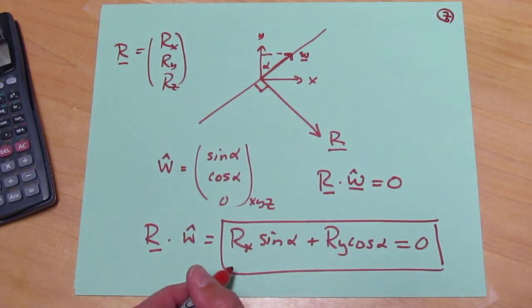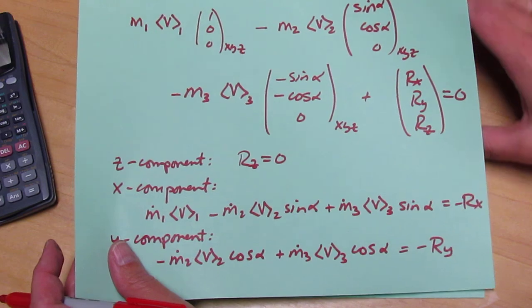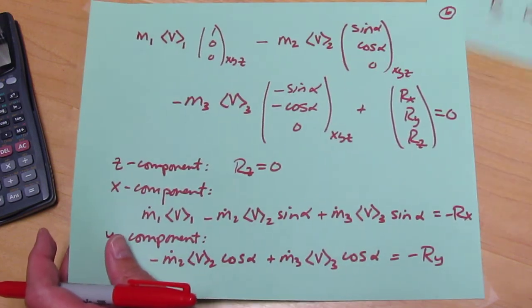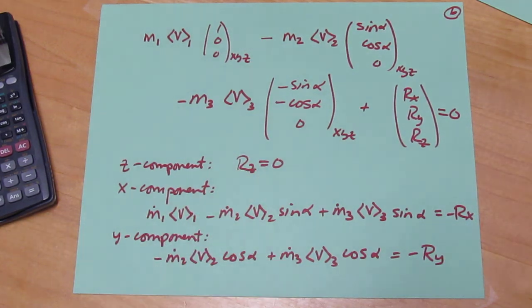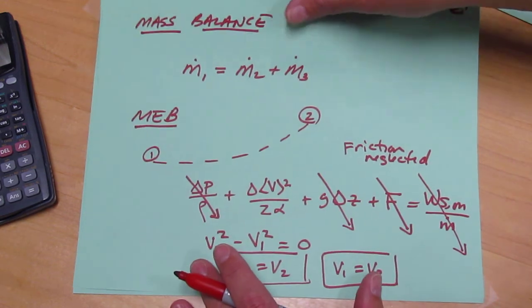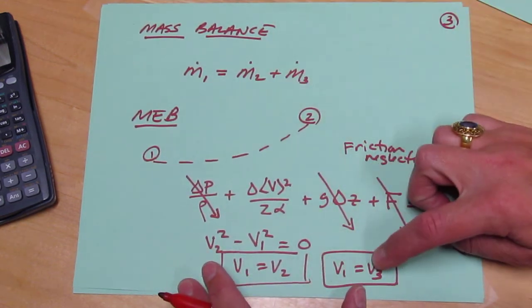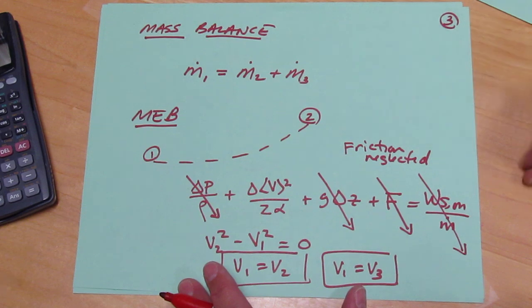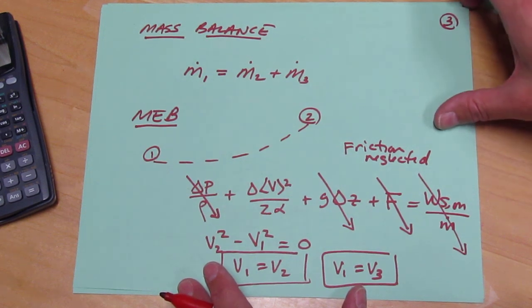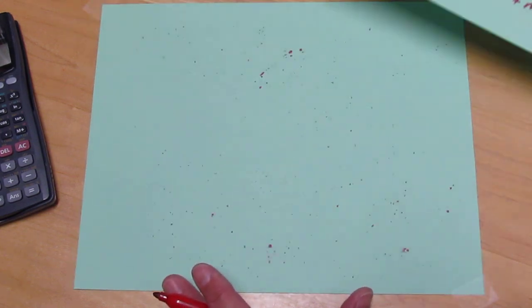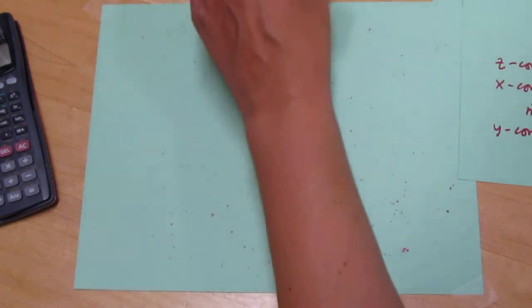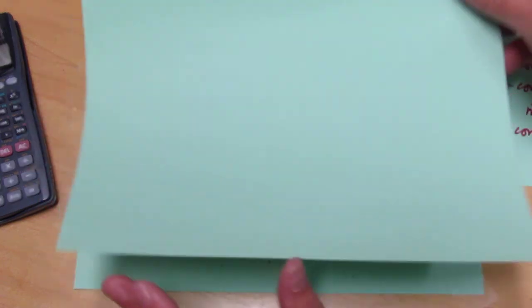So, this additional fact, plus the two components of the momentum balance, plus the mass balance result, plus the fact that the velocities are equal, is all enough to solve the problem. So, the rest of what we have to do is just a bit of algebra. We can get it started, and then maybe leave the rest to you.